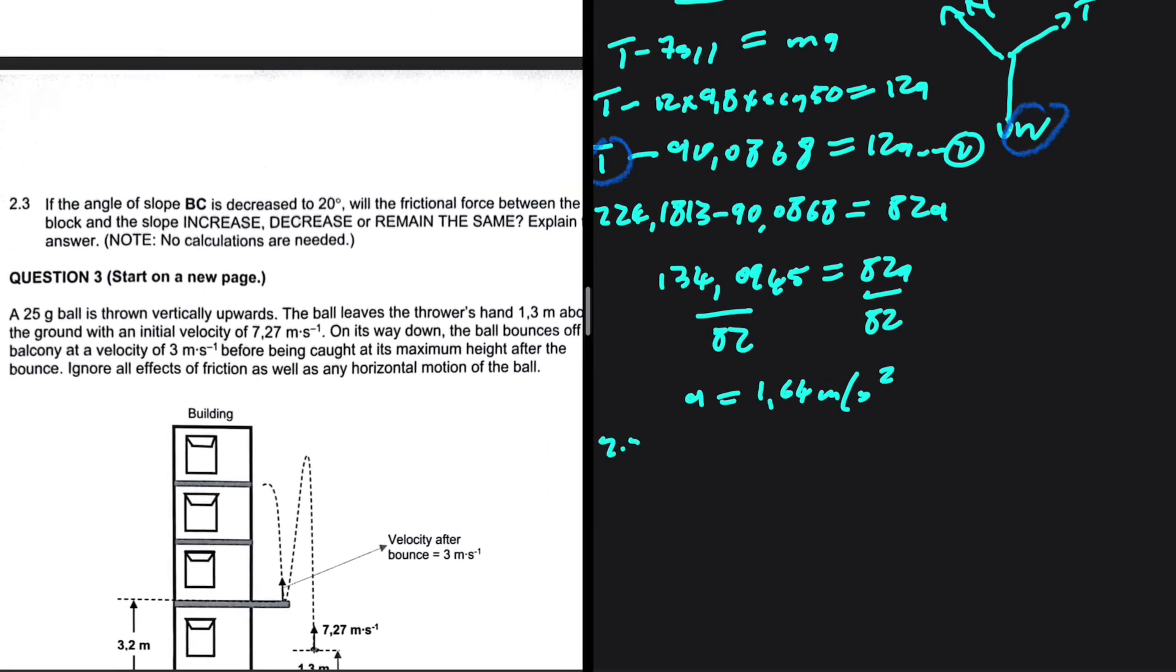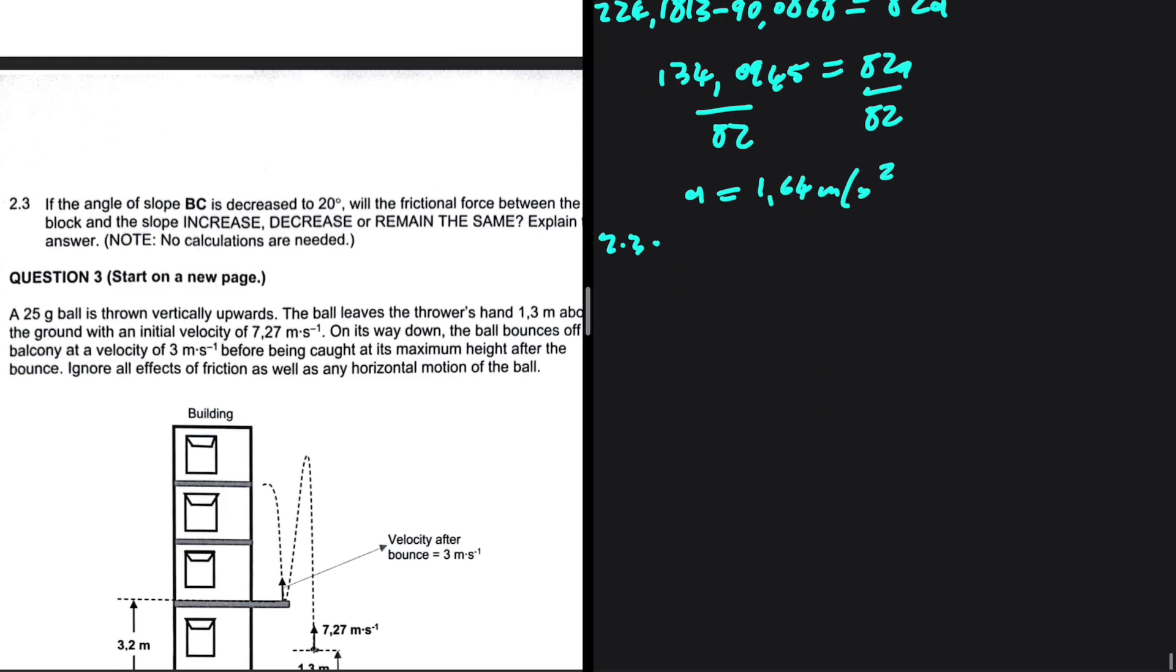Let's do 2.3. So 2.3 is saying that if the angle of slope BC is decreased to 20°. Initially, it is 30° and now it has been decreased to 20°. Will the frictional force between the block and the slope increase, decrease, or remain the same? Explain your answer.